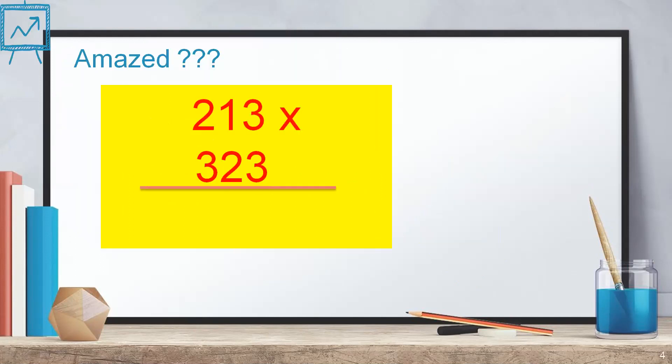If I write the answer of this multiplication as 9, 9, 7, 8, and 6, that is 68,799. Aren't you amazed? If so, you can also amaze your friends by learning this trick.